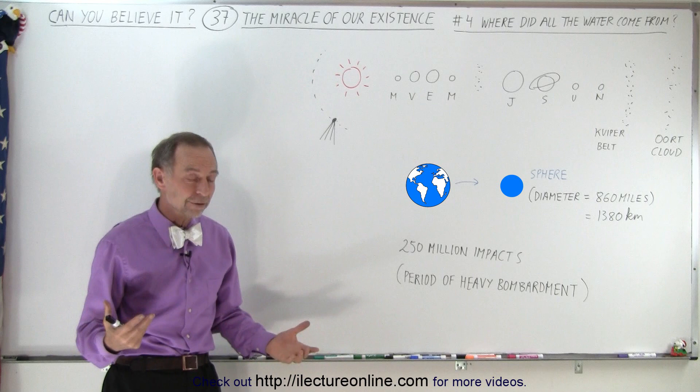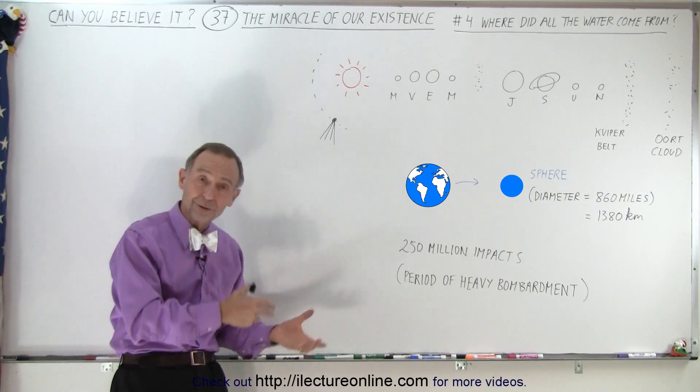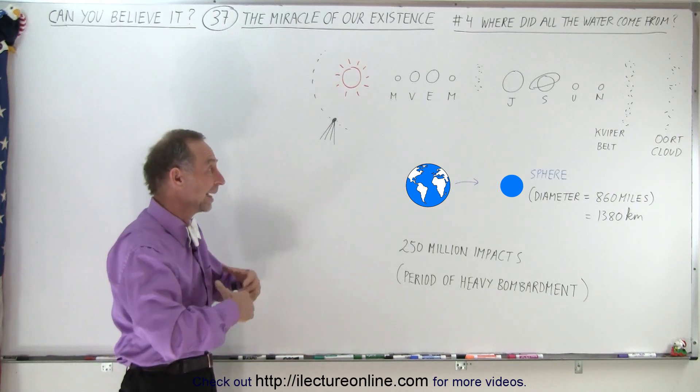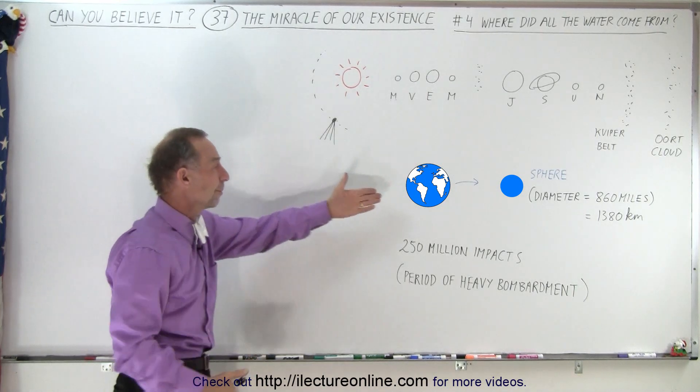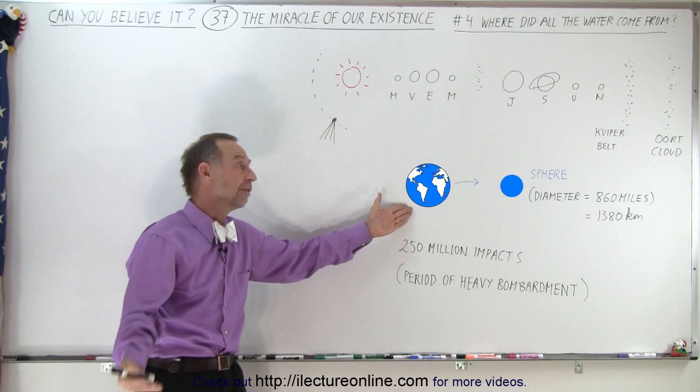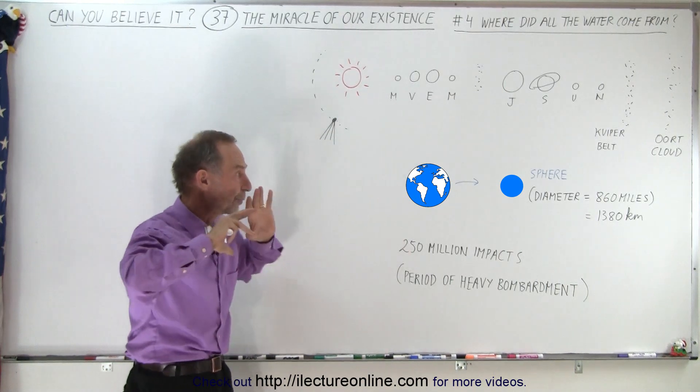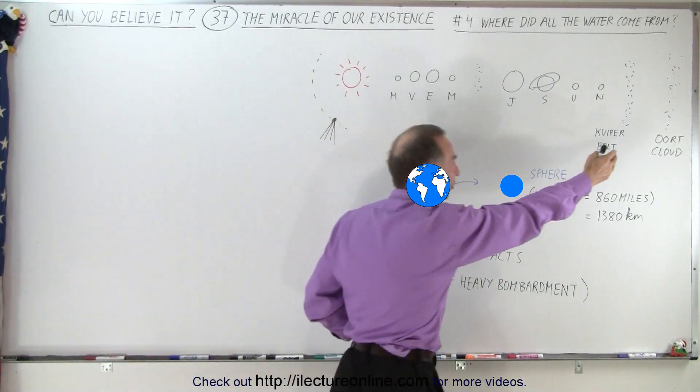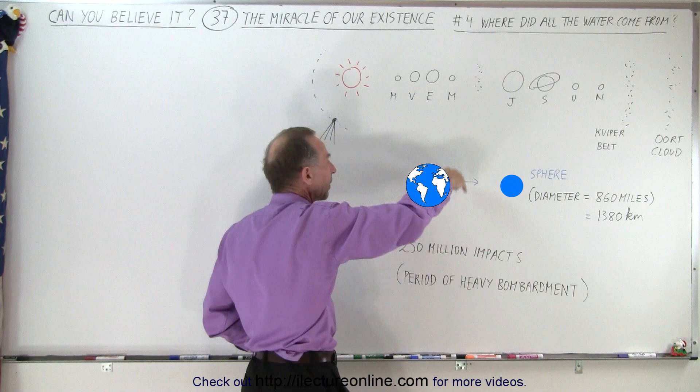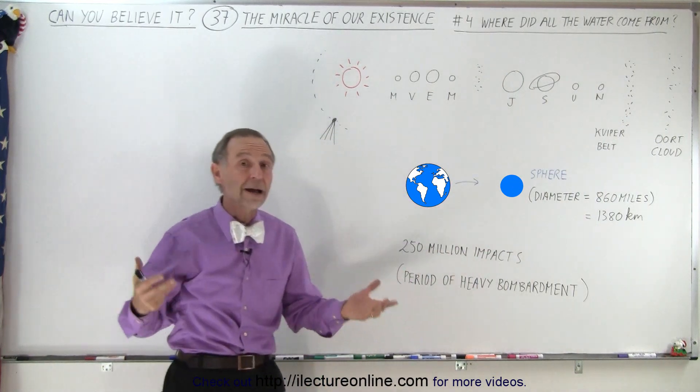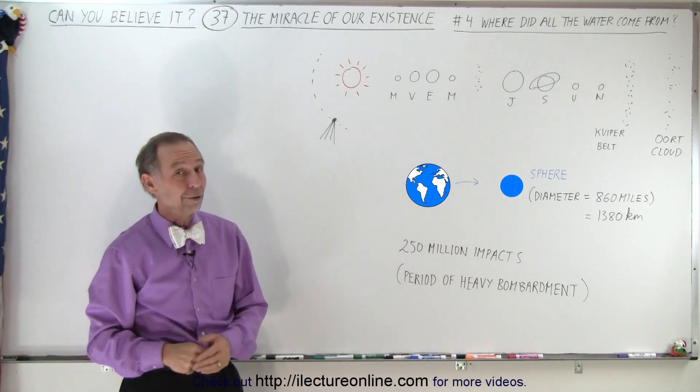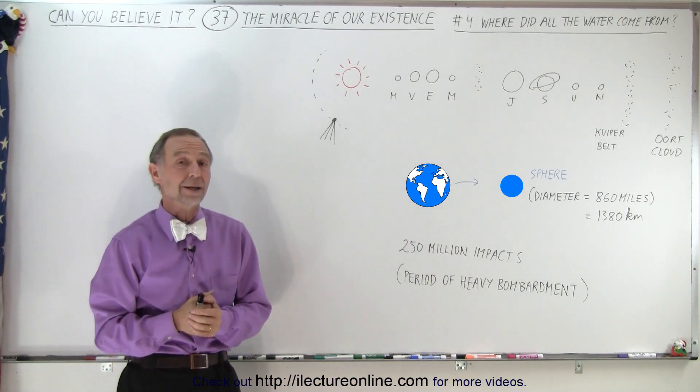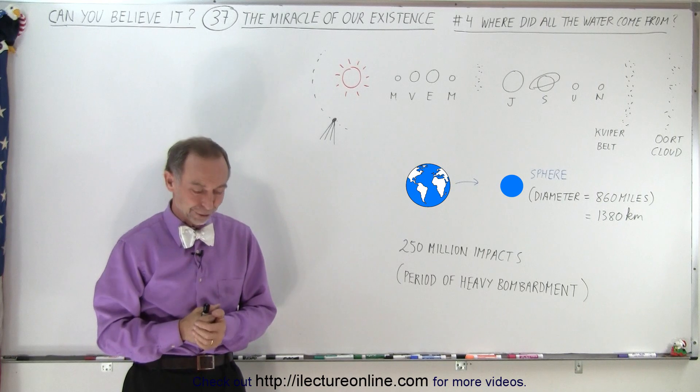So again, water is ubiquitous in the universe, but getting it onto a terrestrial planet is another story. And again, it's amazing, the miracle of our existence depended upon the ability for all that water to come back after it was driven out of the inner solar system, turn into ice, and then comets brought it all back to the Earth so that we now have oceans, enough water to make a sphere 860 miles across. So that is why we have water around the Earth.